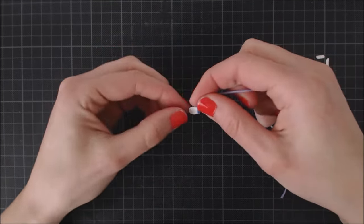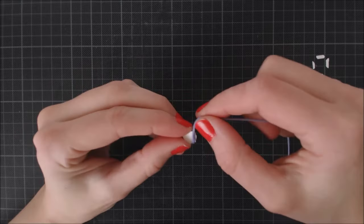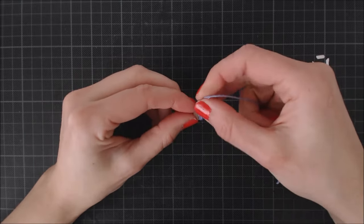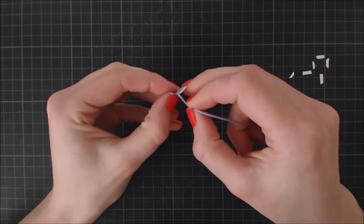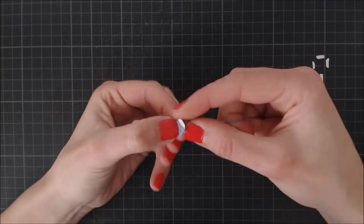I start wrapping the twine in one direction, and when the ball is almost completely covered, I will do it in the other direction.